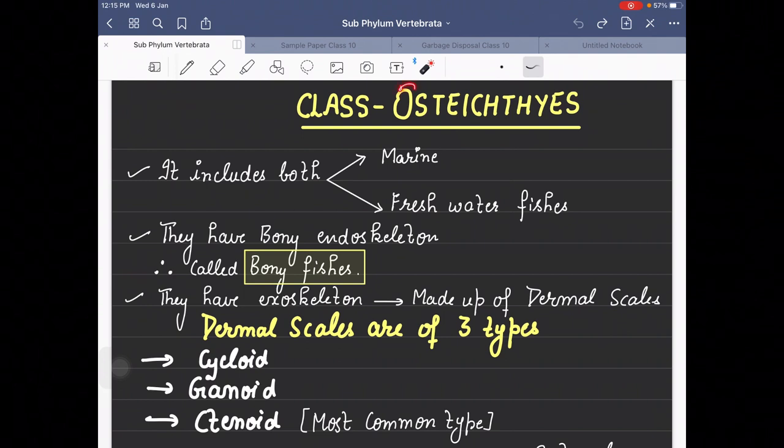Bony fishes are known as Osteichthyes. They include both marine and freshwater fishes. If we talk about their skeletal system, they have bony endoskeleton. One difference between cartilaginous and bony fishes is that in bony fishes the endoskeleton is bony, which is why they are called bony fishes.